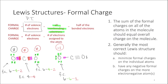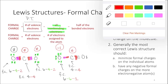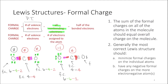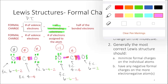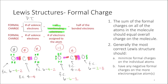For carbon in structure two: four valence electrons minus four assigned electrons (one from each of the four bonds) equals zero — carbon has a formal charge of zero. For the last oxygen in structure two: six valence electrons minus two non-bonding electrons minus three (one from each bond, since it has a triple bond). Six minus two minus three gives this oxygen a formal charge of plus one.